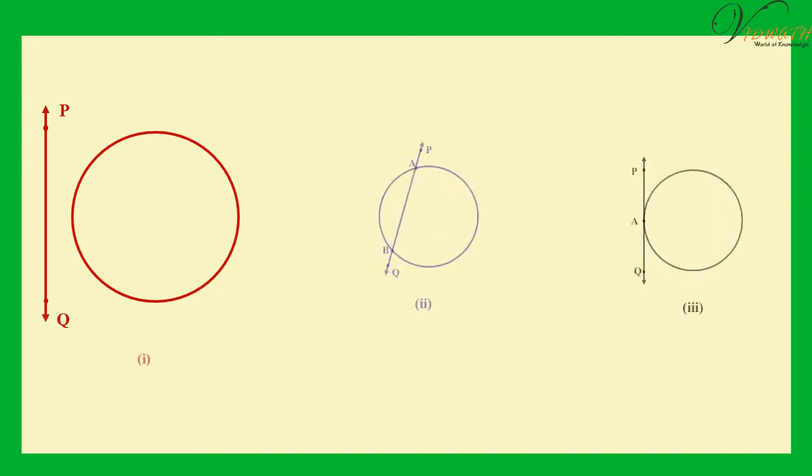So, let us consider a circle and a line PQ. There can be three possibilities. First, the line PQ and the circle have no common point. In this case, PQ is called a non-intersecting line with respect to the circle.